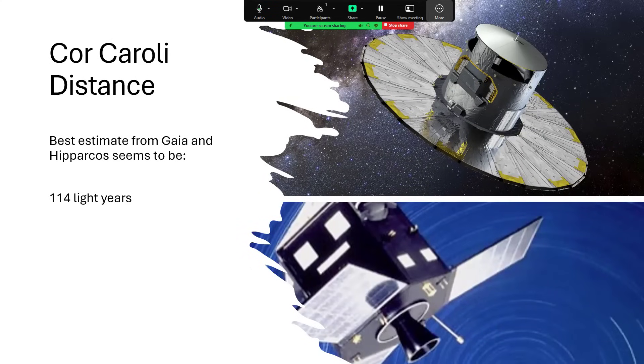114 light years away from Earth, so relatively nearby. Those estimates seem to agree from Gaia and Hipparcos surveys. Usually we find there's a slight difference between them. The Hipparcos satellite seems to have a tendency to overestimate the distances.